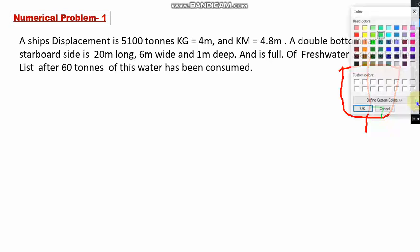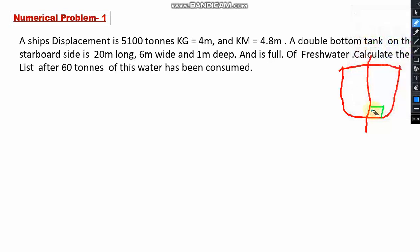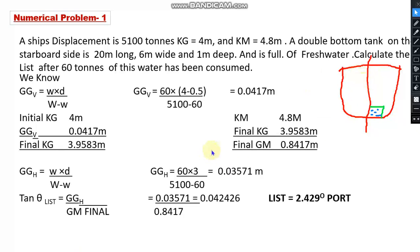This tank is full of fresh water. That is what is given in the question. And what is given is we have 60 tons of water has been consumed from this tank, and we are supposed to find out the resulting list. So this is what is asked in the question, and I hope you have understood the question with the help of this figure.